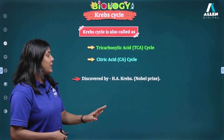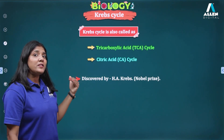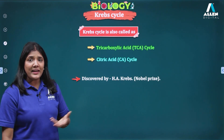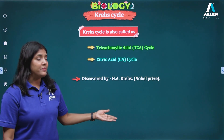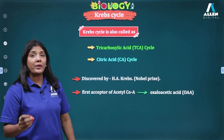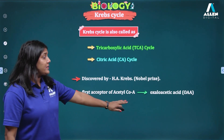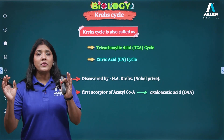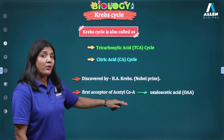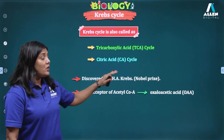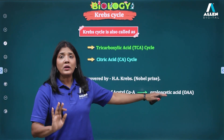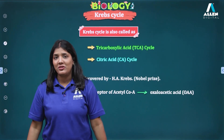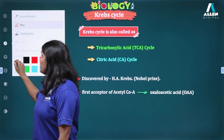The cycle is called Krebs cycle because it was discovered by Hans Krebs, and he won a Nobel Prize for that discovery. The first acceptor of acetyl coenzyme A is oxaloacetic acid. The two-carbon acetyl coenzyme A reacts with the four-carbon oxaloacetic acid to form six-carbon citric acid.